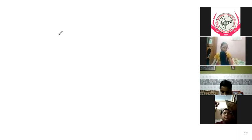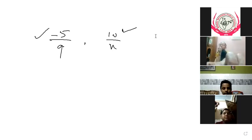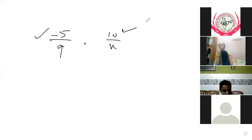There is a question in assignment 2.5: find the value of x if the pair of rational numbers given below are equivalent. The pair is 5 upon 9 and 10 upon x. These two rational numbers are equivalent — meaning they are equal. We need to find the value of x.